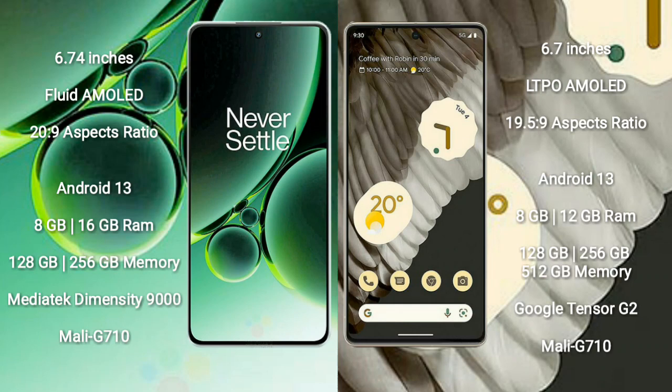OnePlus Nord 3 runs on the Android 13 operating system. Google Pixel 7 Pro also runs on Android 13. OnePlus Nord 3 comes with 8GB or 16GB RAM and 128GB or 256GB internal storage, powered by the MediaTek Dimensity 9000 processor with a Mali-G710 GPU.